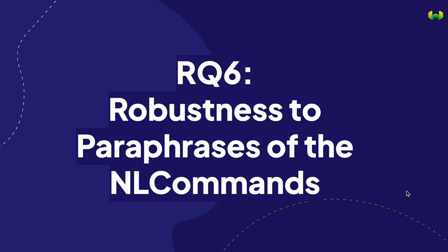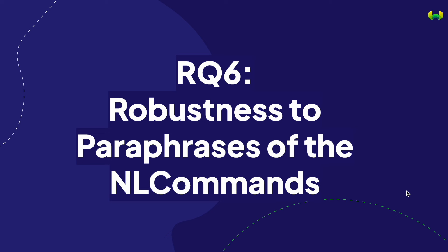Another research question is the robustness of the Weaviate GraphQL Gorilla to paraphrases of natural language commands. The GPT-3.5 prompted to generate natural language commands might have a particular style and tone, always starting with 'show me' or 'get me' — how robust will it be to super casual commands or increasingly formal requests? We can use self-instruct and GPT-4 to generate paraphrases and either add them to training data or use them in testing evaluation.